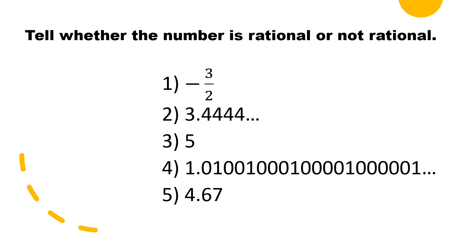Let's try to answer this — tell whether the number is rational or not rational. Number one: negative 3 over 2. It is the ratio of two integers — rational. Number two: a repeating decimal — rational.